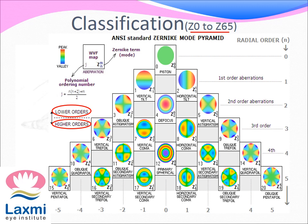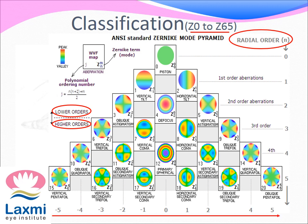That is, the first five orders into consideration. Vertically down, it is placed in radial order, denoted by the letter small n. While horizontally, it is placed according to the azimuthal frequency, denoted by small m. These are shown as subscript and superscript respectively to the letter Z on the lower right corner of each polynomial. The number on the lower left corner denotes the polynomial ordering number calculated by the formula given here.